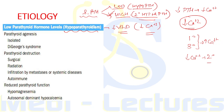The causes of low parathyroid hormone levels include parathyroid agenesis, parathyroid destruction, or reduced parathyroid gland function. Parathyroid agenesis can be seen in isolated cases or with an associated syndrome, which is DiGeorge syndrome. Parathyroid destruction can occur during surgery, by radiation used in treatment of thyroid carcinoma, or by infiltration due to metastasis or systemic diseases.